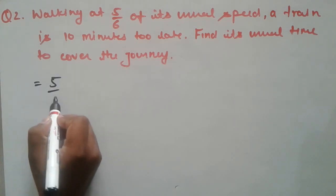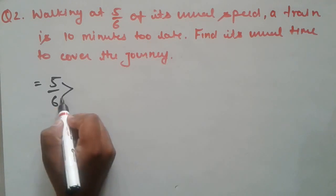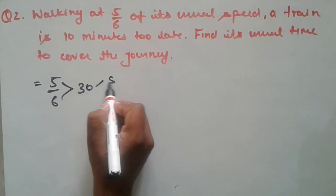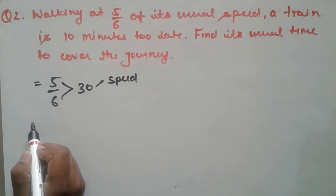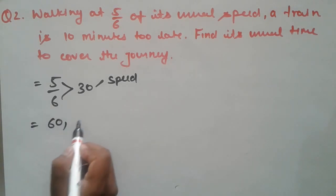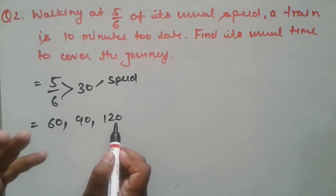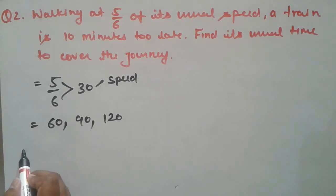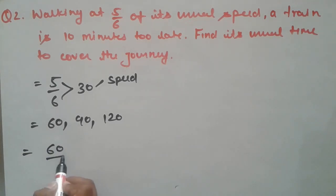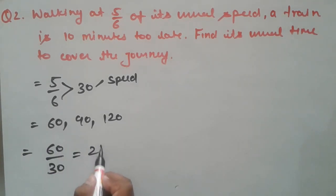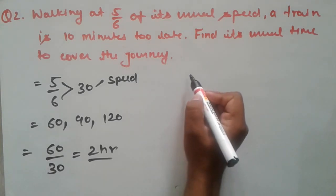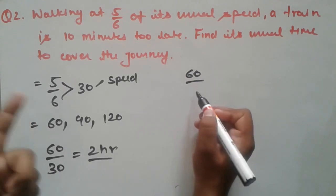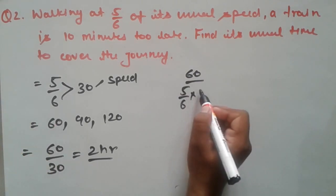Here 5/6 is the ratio of speed. If we take LCM of 5 and 6, it is 30, and we assume this number as the speed. Distance is also not given, so we have to assume the distance, and it should be a multiple of 30. We can take 60, 90, or 120 — whatever makes calculation easy. If we assume 60 as the distance and 30 as the speed, the usual time taken is 2 hours. Total distance is 60; when the train travels at 5/6 of 30 (which is 25), there is a difference of 10 minutes.